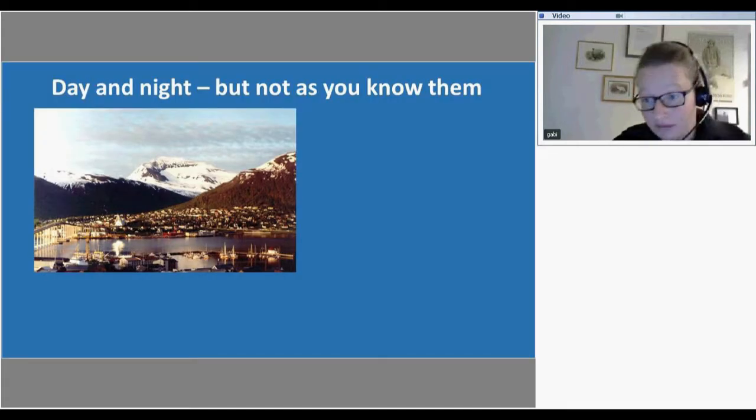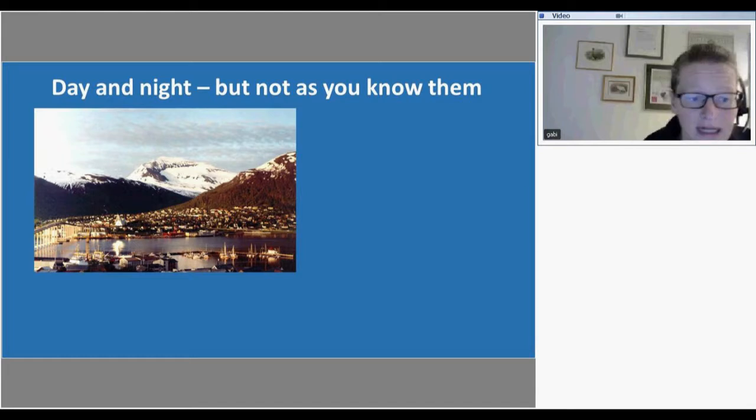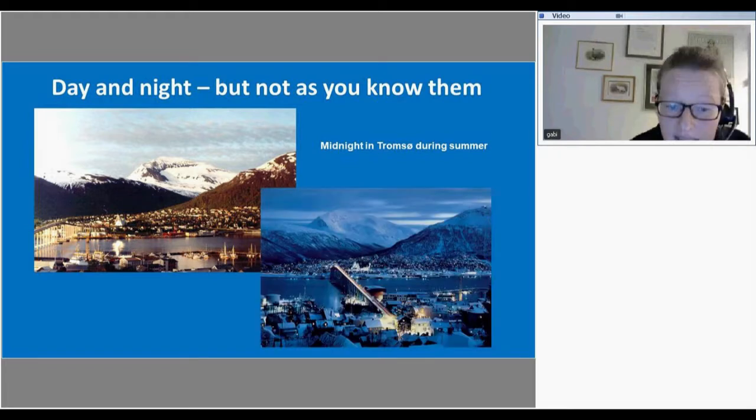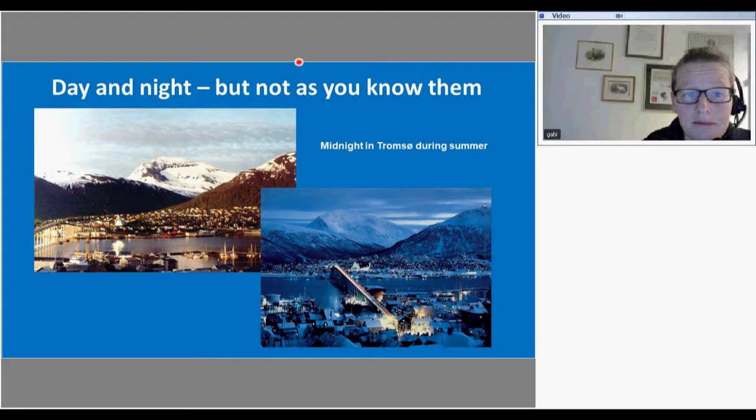We have of course day and night as well in the Arctic but maybe not as you know them. This picture here is a picture of Tromsø where I live and the picture has been taken in the middle of the night. This is 12 o'clock at night and you can see it's bright daylight and the sun is shining. We can also get a nighttime picture. This picture has been taken in the middle of the day in Tromsø. This is midday in winter and above here we have midnight in summer. Rather odd idea about day and night.